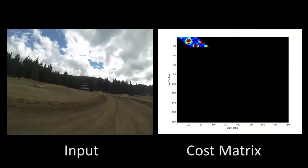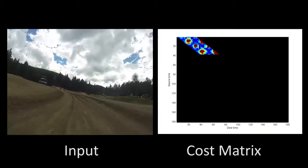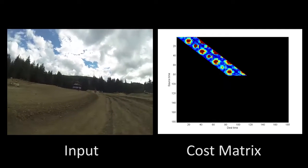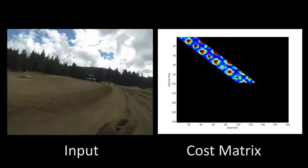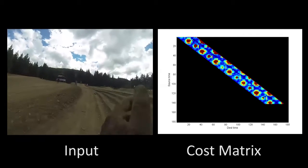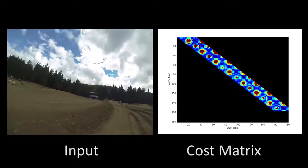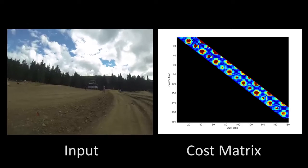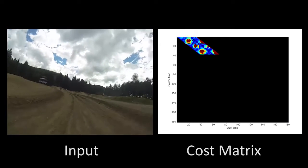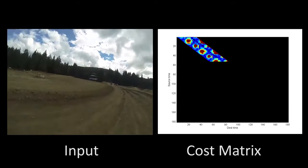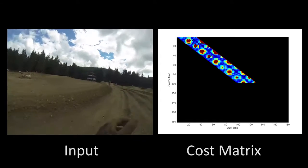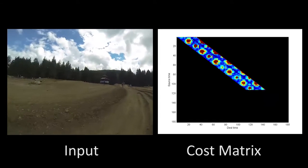As the video is being processed, we track frames and compute the costs to transition from each frame to a number of following frames. The cost is related to the amount of visual motion that would be incurred by each transition. Here we show the costs as a matrix being filled for 6 seconds of an input video captured during a 5k run using a body-mounted GoPro camera.